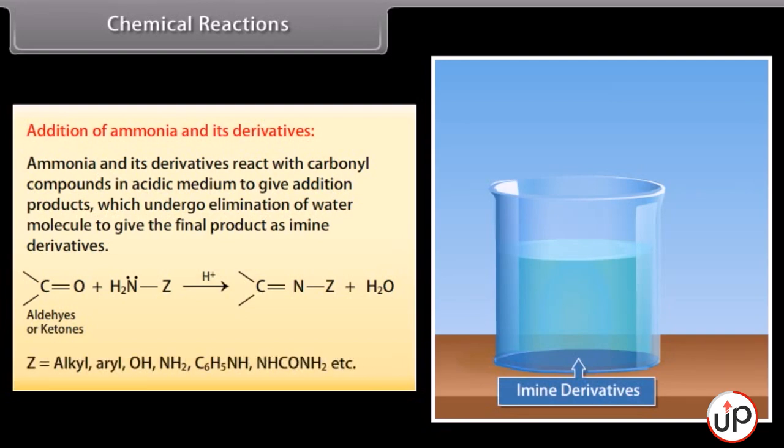Z can be alkyl, aryl, OH, NH2, C6H5NH, NHCONH2, etc.